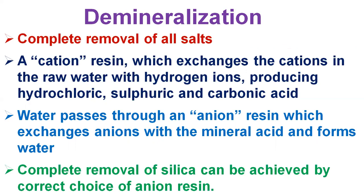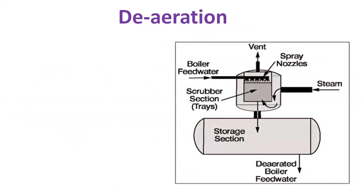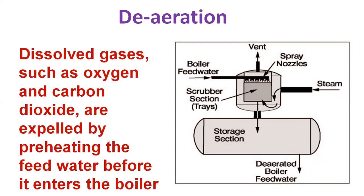Ion exchange processes can be used for almost total demineralization if required, as is the case in large electric power plants. In deaeration, most dissolved gases such as oxygen and carbon dioxide are expelled by preheating the feed water before it enters the boiler. All natural waters contain dissolved gases in solution. Certain gases such as carbon dioxide and oxygen greatly increase corrosion. When heated in boiler systems, carbon dioxide and oxygen are released as gases and combine with water to form carbonic acid. Removal of oxygen, carbon dioxide and other non-condensable gases from boiler feed water is vital to boiler equipment longevity as well as safety of operation.